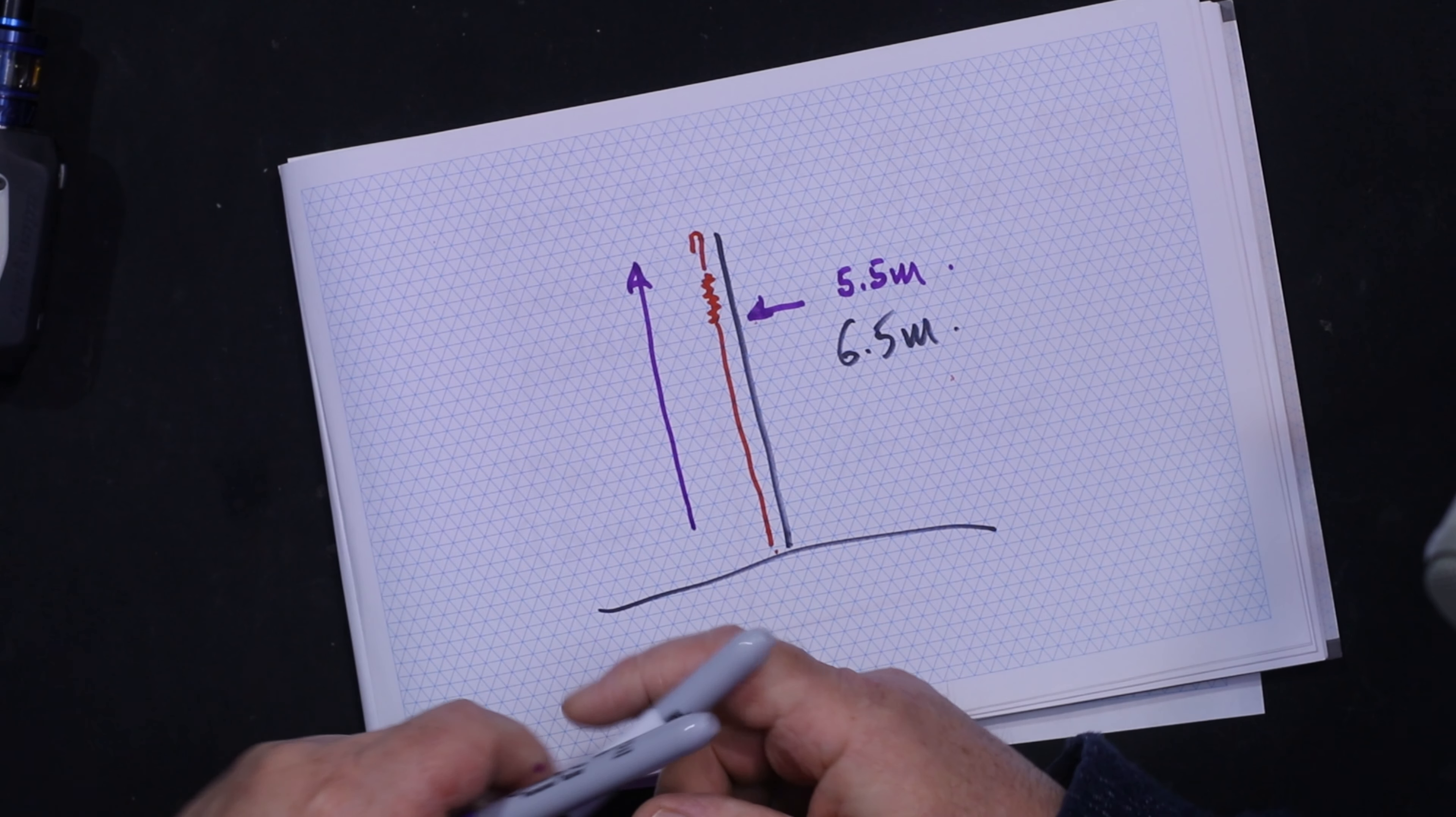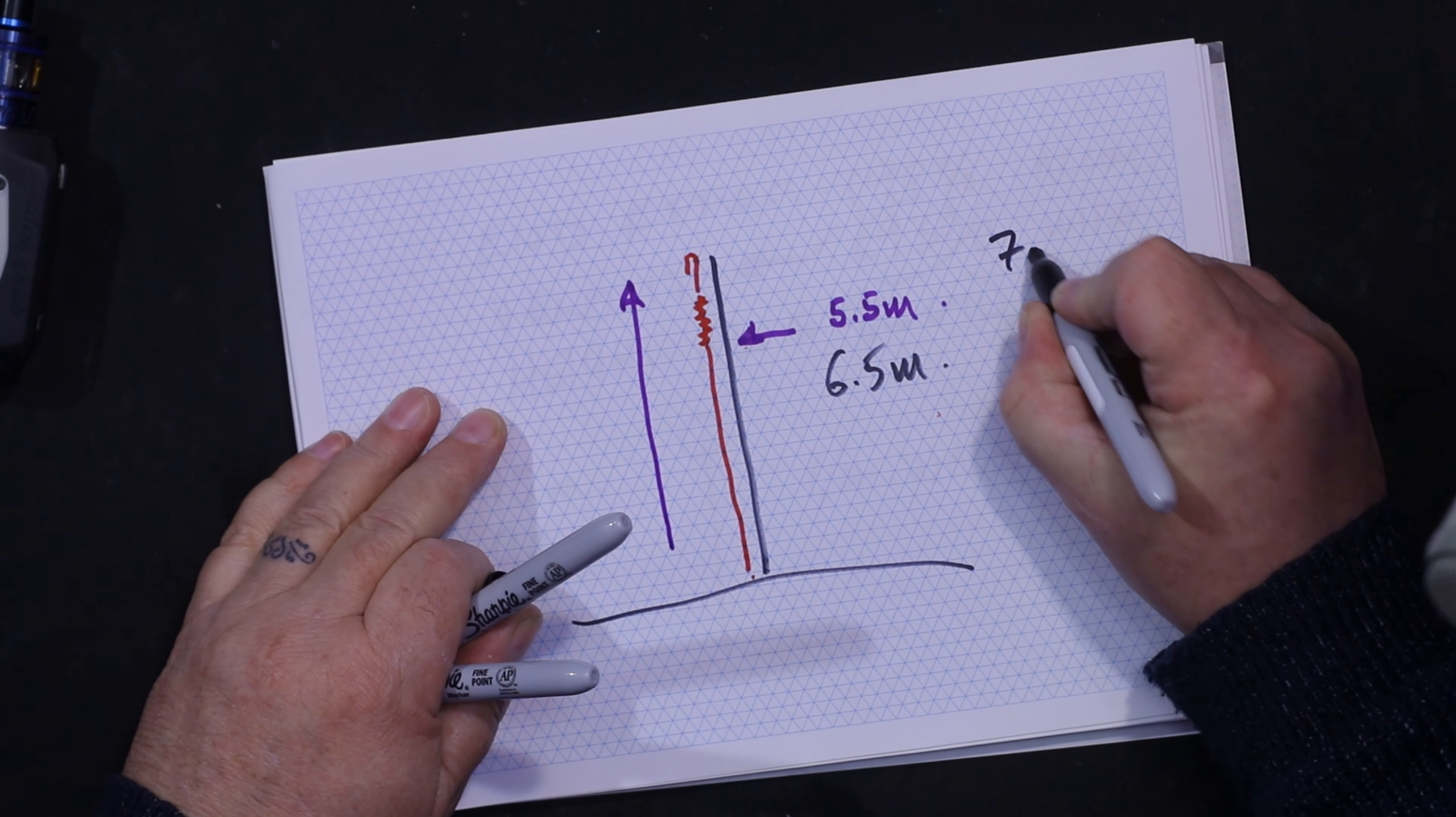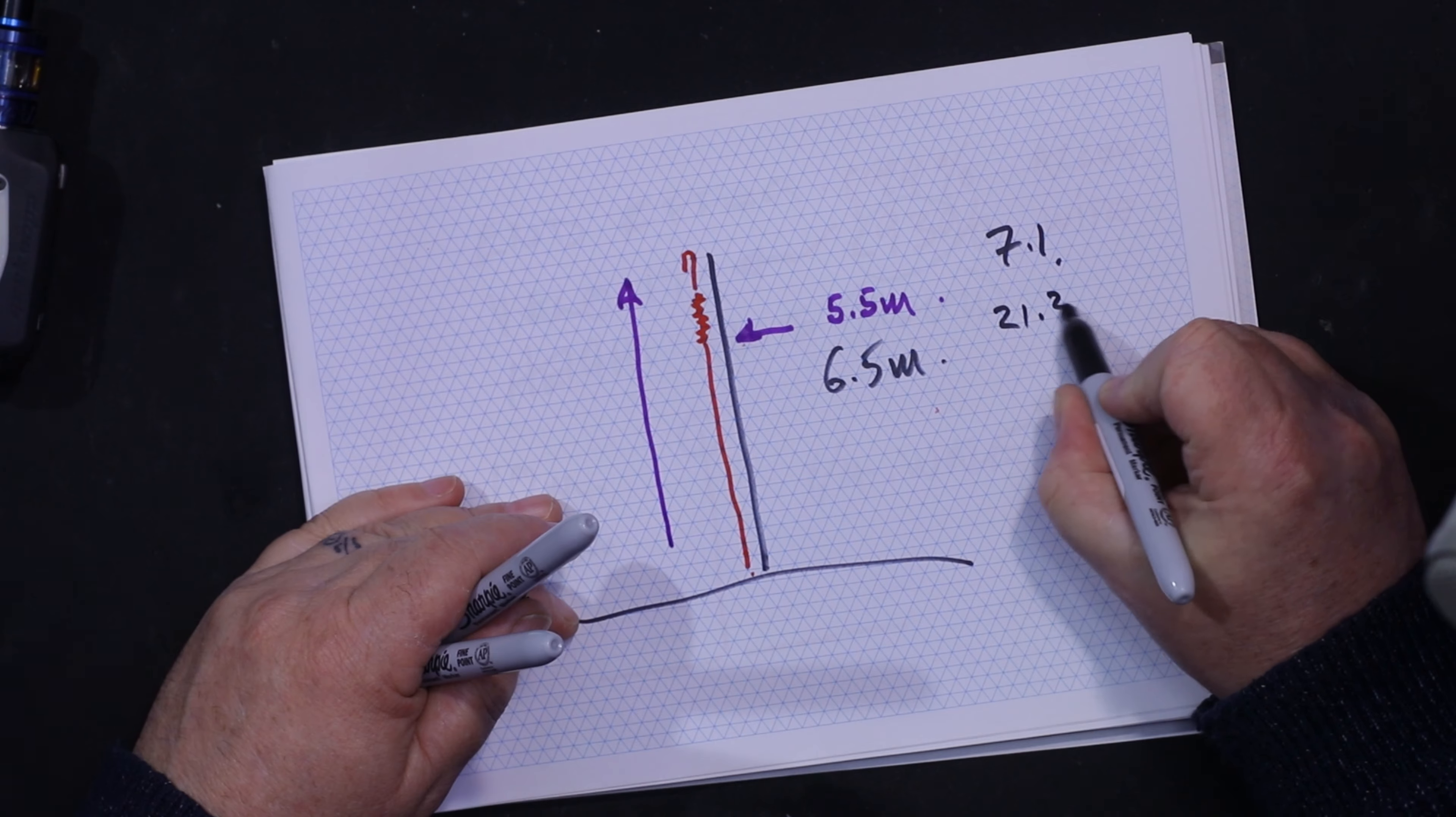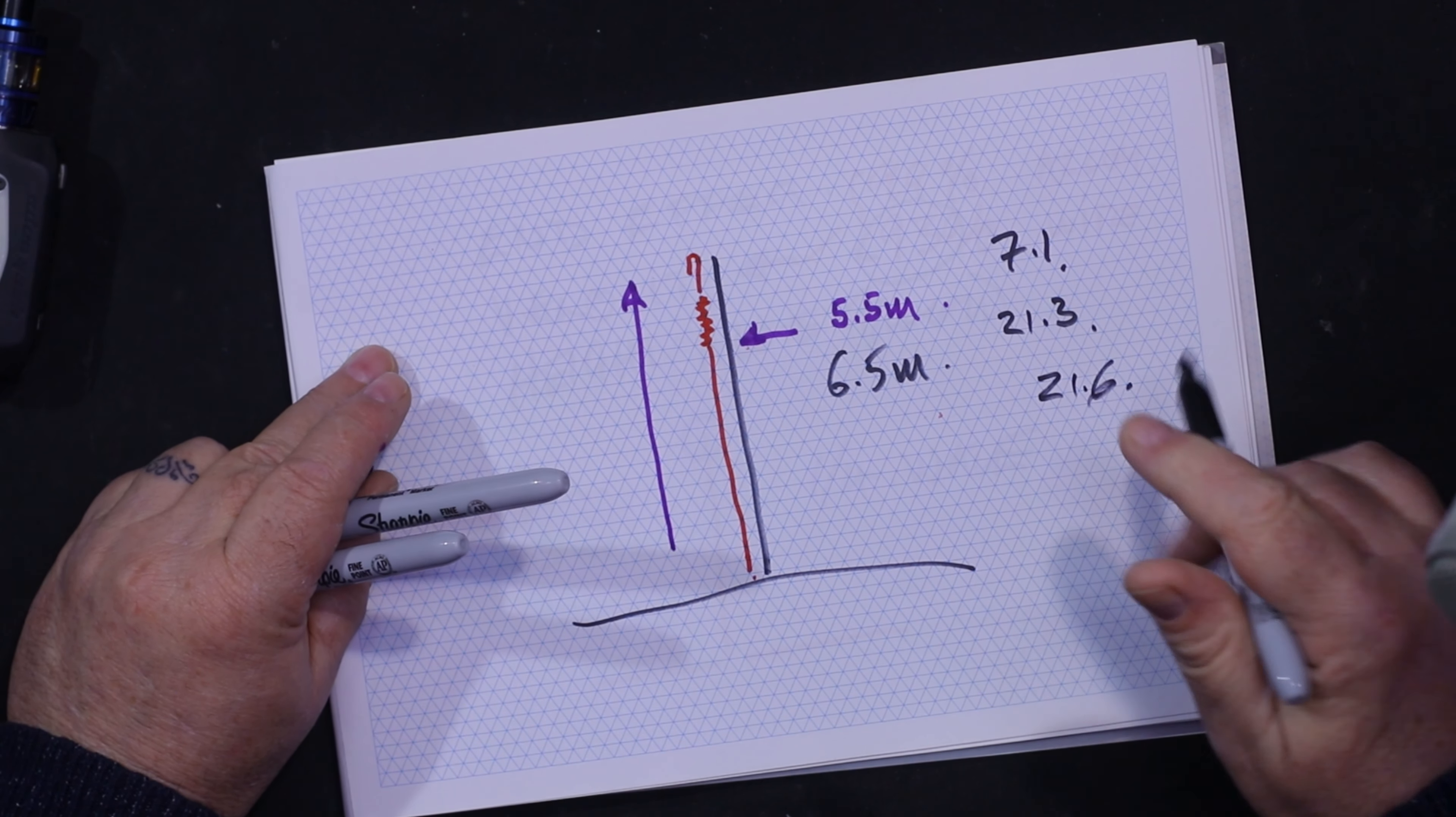From the experiments we've done, when you take a coil and slide it up—it's got to be physically connected—the third harmonic starts to move. Normally on 7 megahertz you'd get 7.1, multiply by three you'd get 21.3.